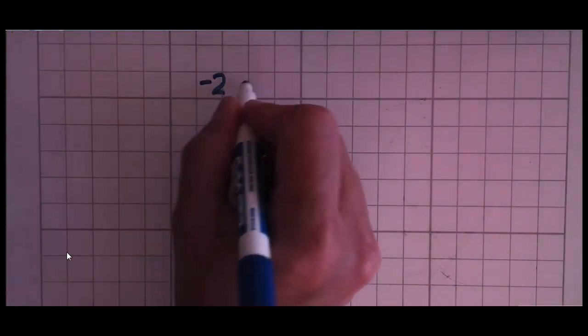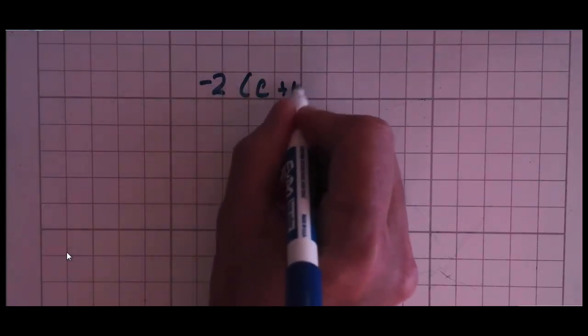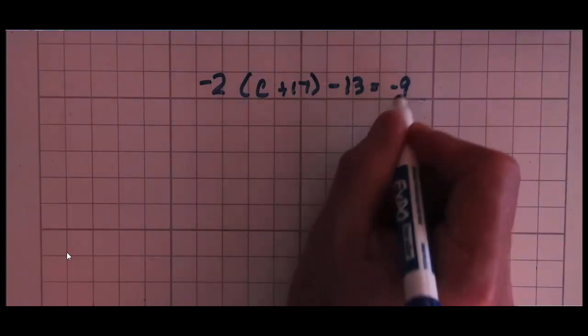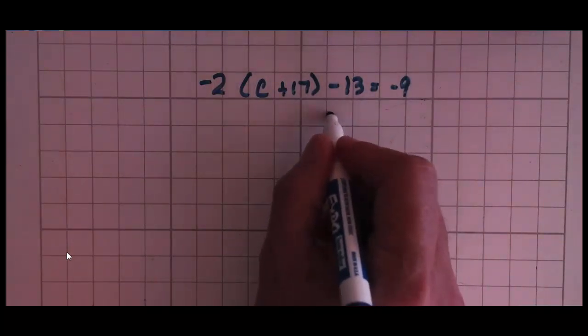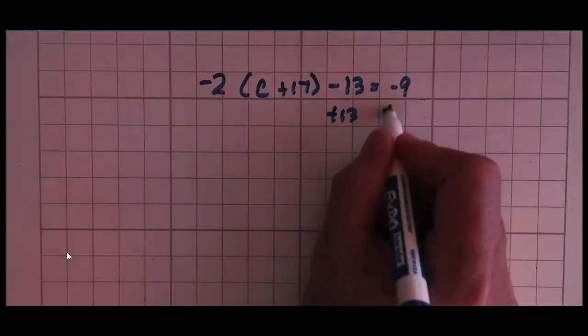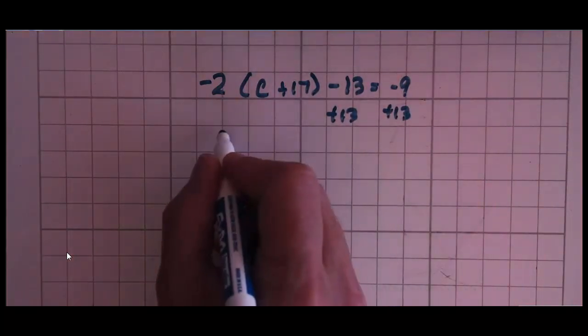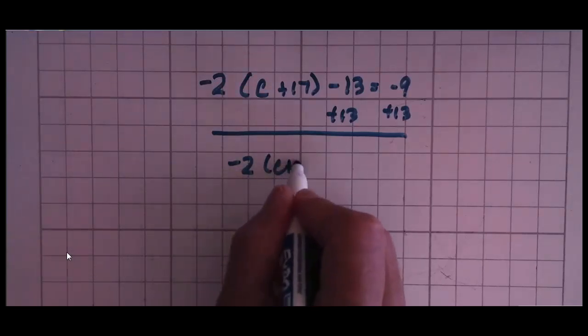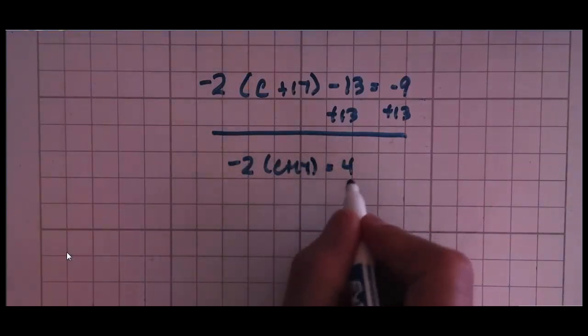Last problem: negative 2 times (c+17) minus 13 = negative 9. Let's start by moving the 13 to the other side and getting rid of that, and we are left with negative 2(c+17) = 4.